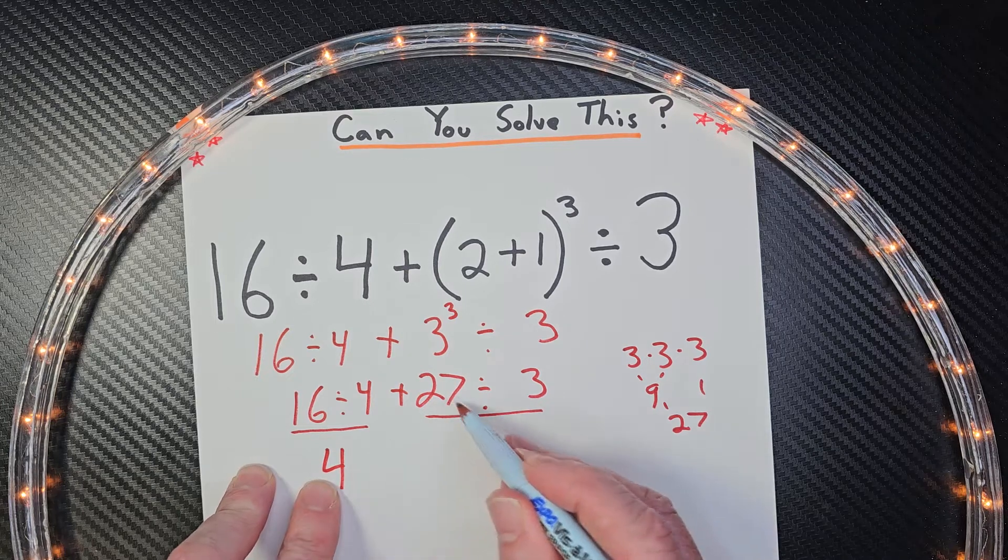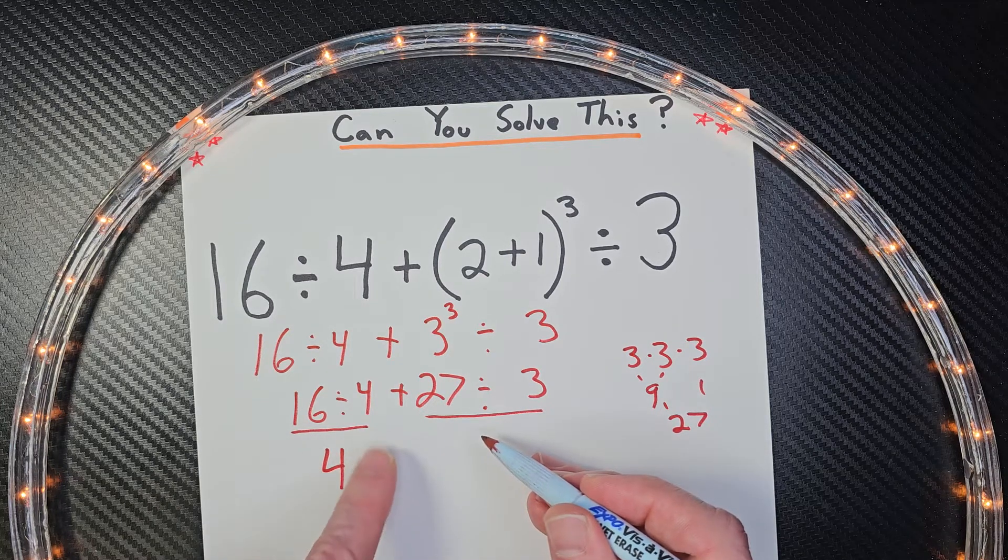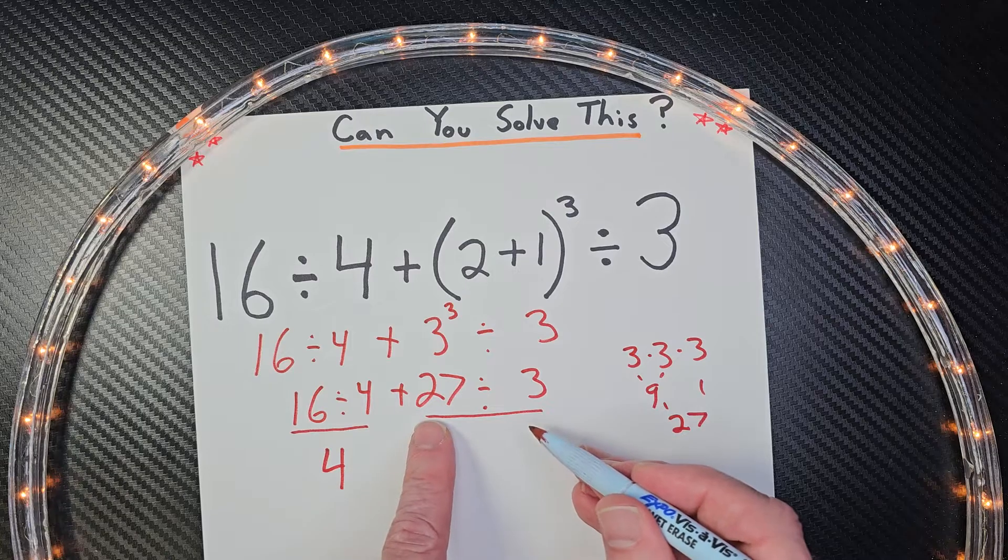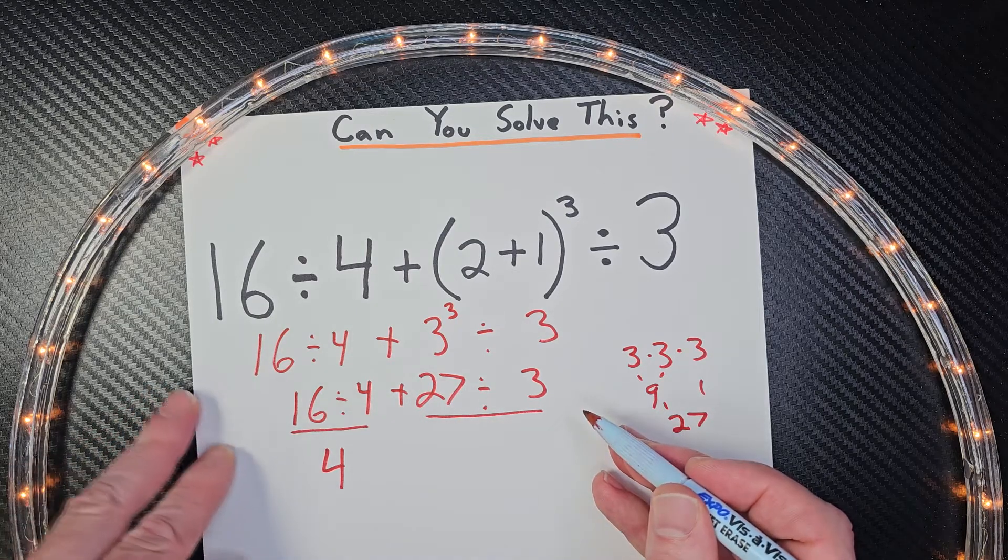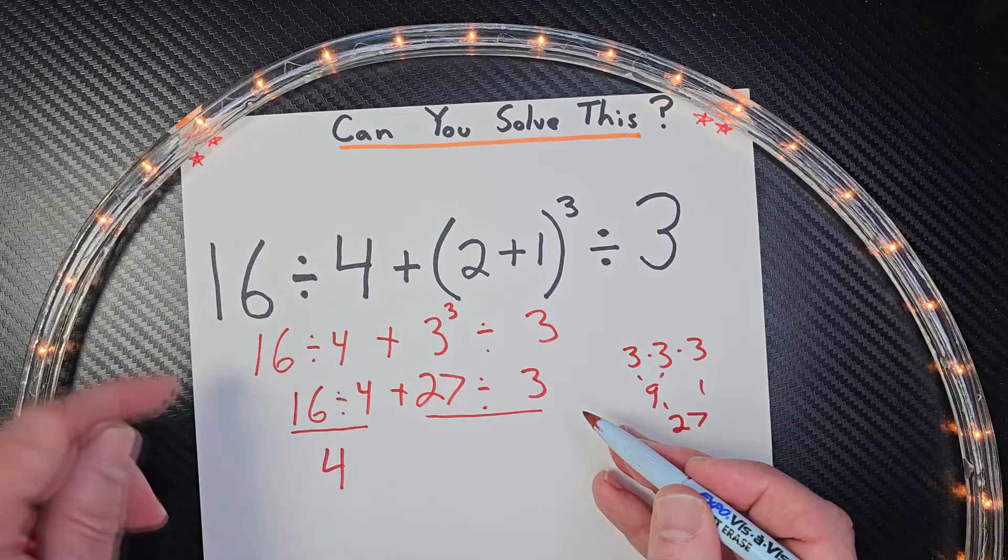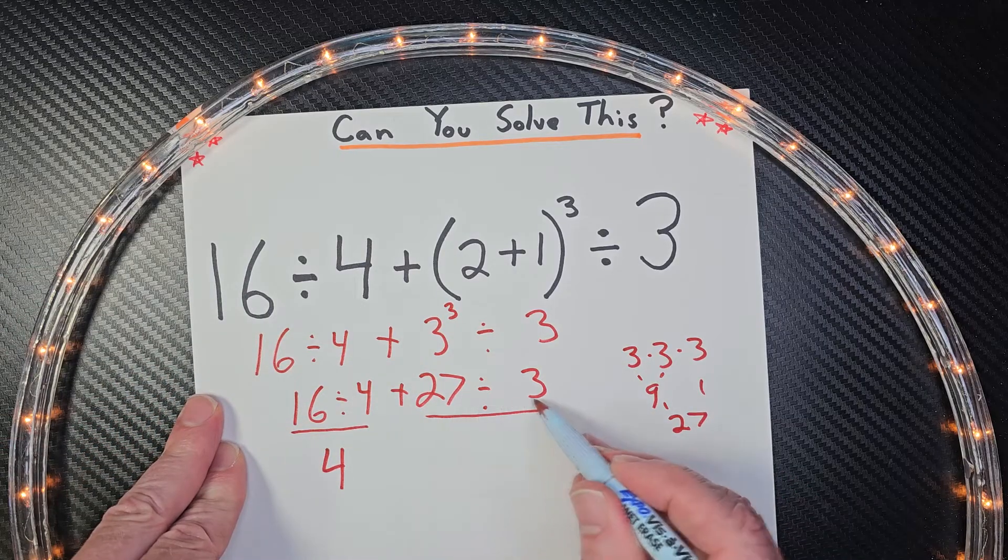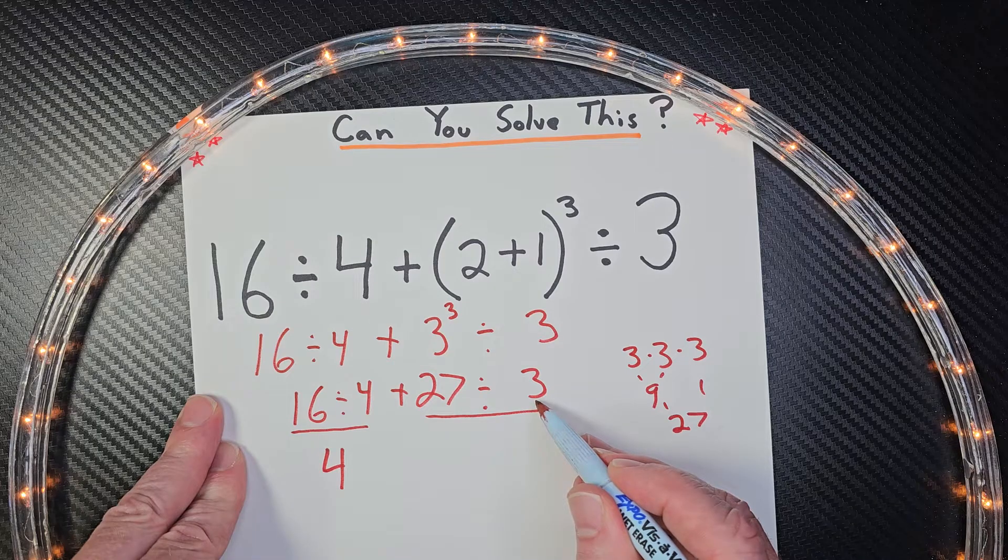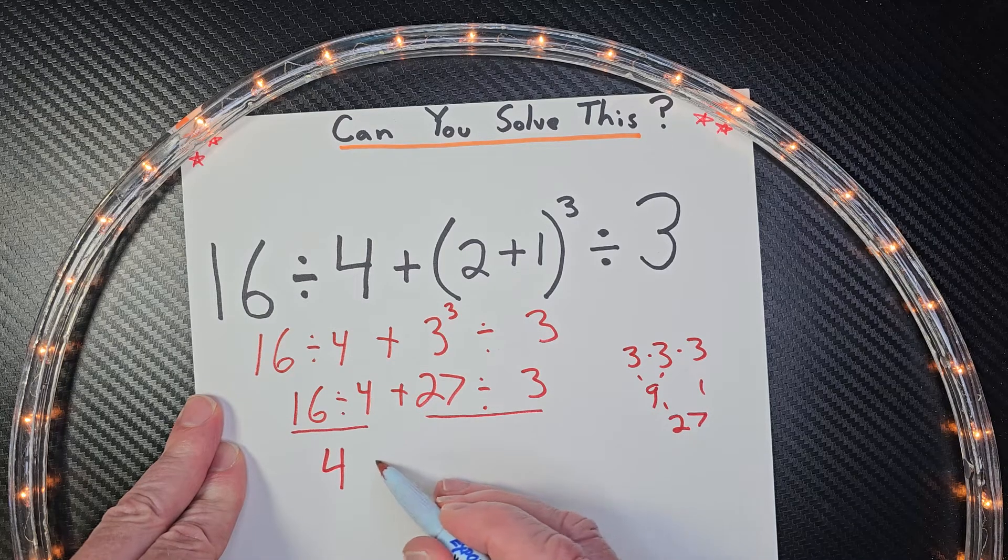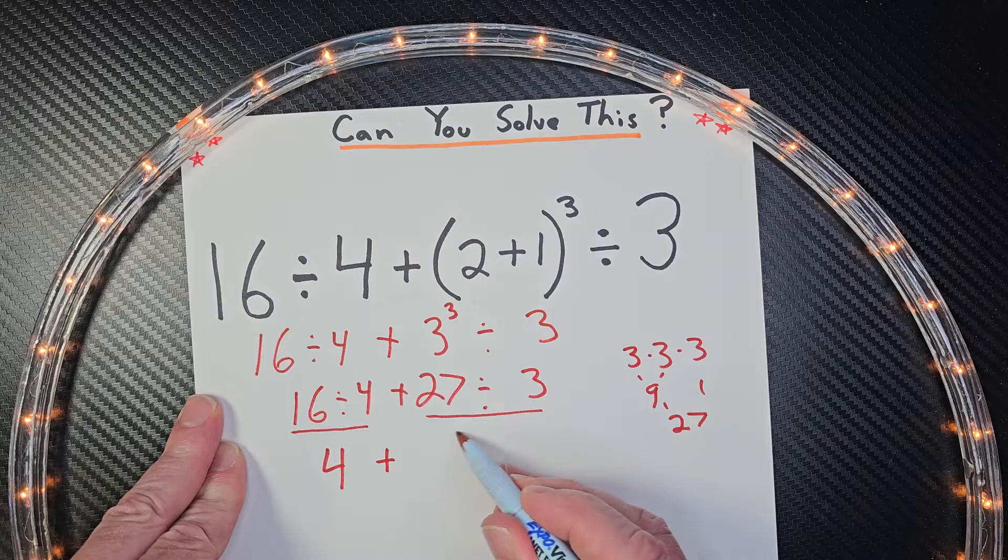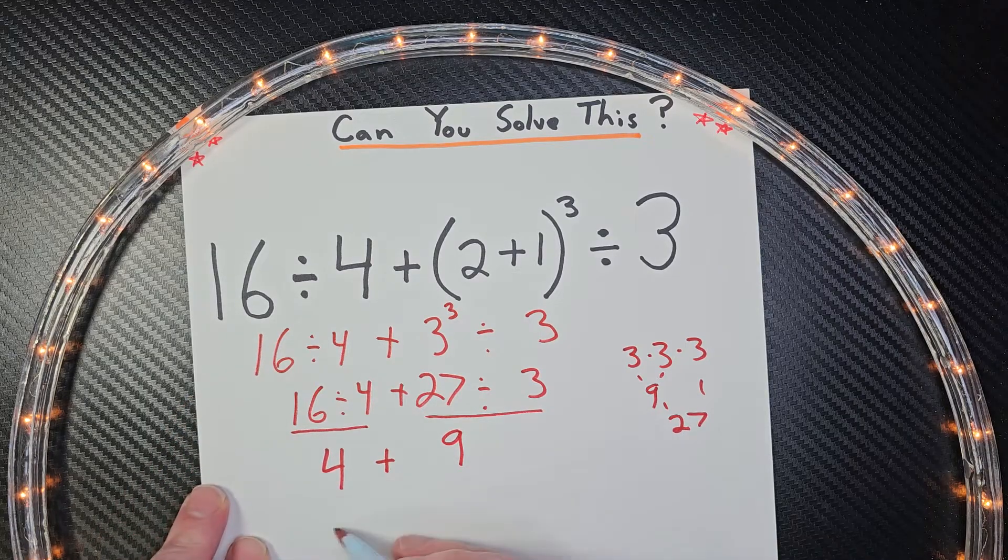And it's not 4 plus 27, because that would be addition. We need to do the multiplication and division first. That's the order of operations we keep consistent on. So 27 divided by 3 would equal 9. So I'm going to do the addition sign here and then 9. So now 4 plus 9 would equal 13.